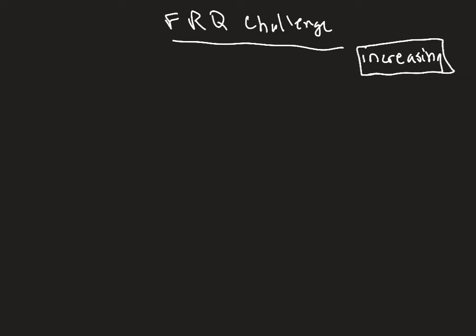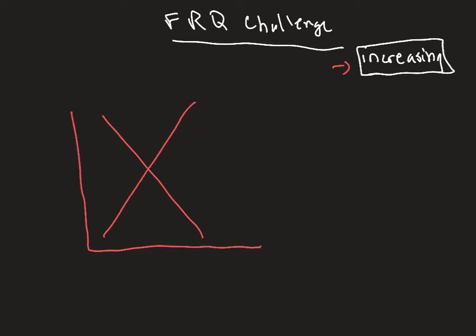The very first thing: suppose that tomatoes are produced in a perfectly competitive, increasing cost industry in a long run equilibrium with identical firms. So the first thing we're always going to do is our side-by-side graphing. We'll have price and quantity for the market, with a supply curve and a demand curve.